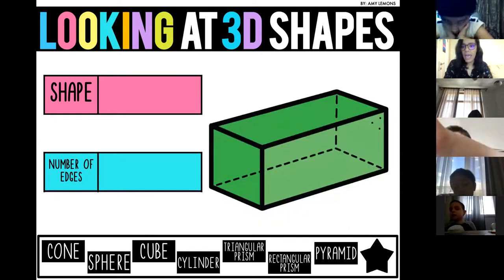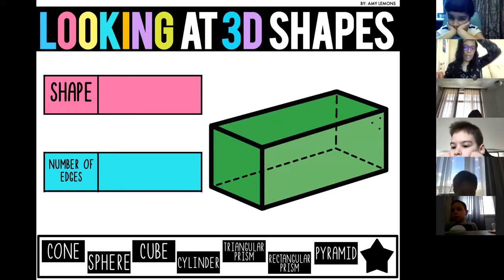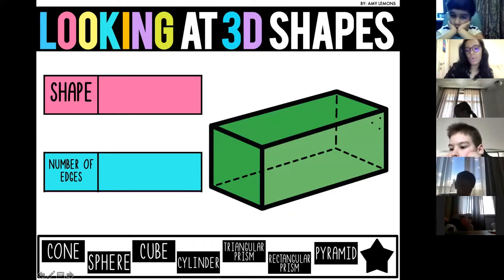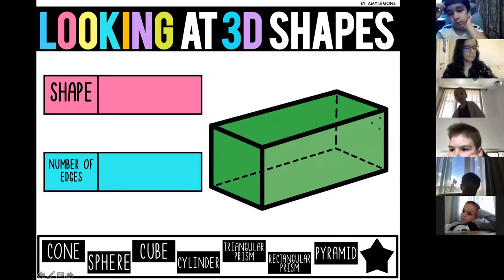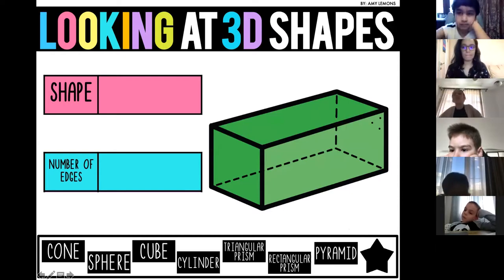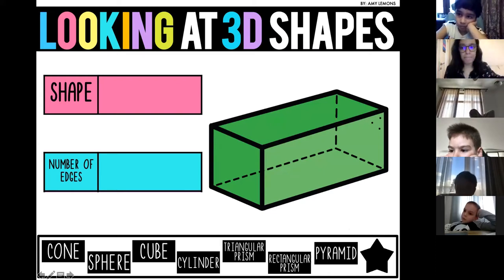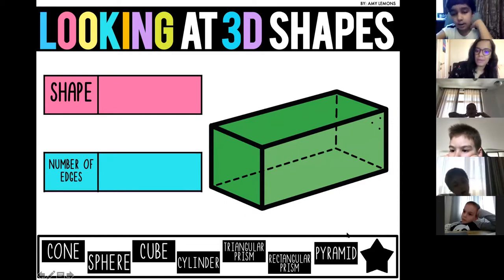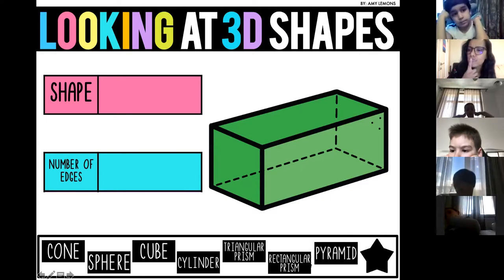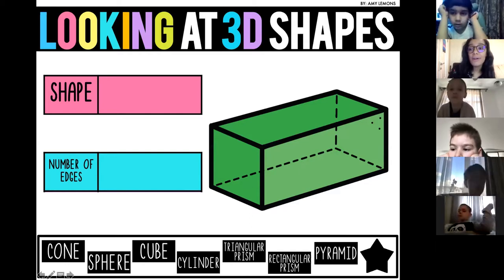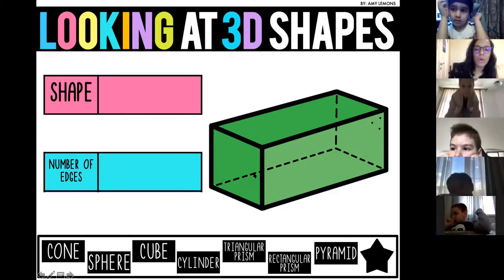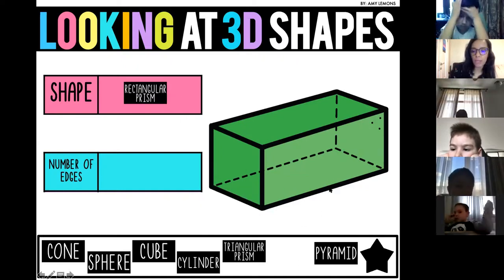Anna, what is the name of this shape? It's like rectangle — a rectangular prism, or cuboid. Well done — rectangular prism or cuboid. Let's count the edges: one, two, three, four, five, six, seven, eight, nine, ten, eleven, twelve. That's twelve.